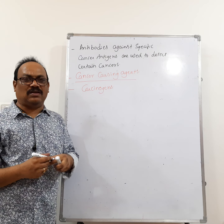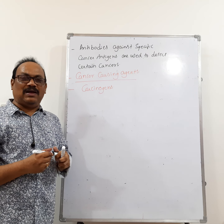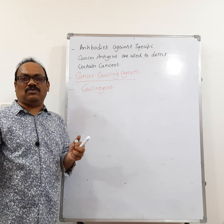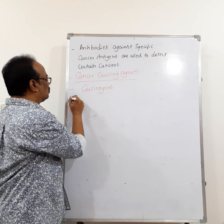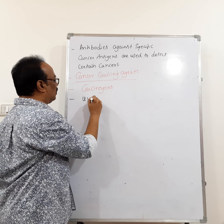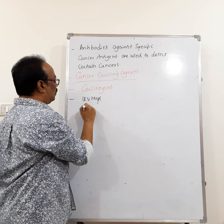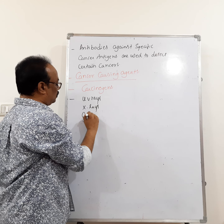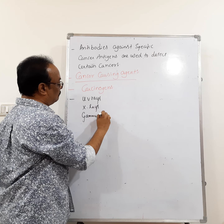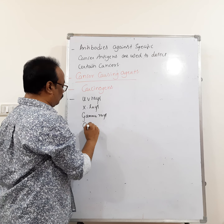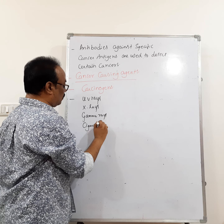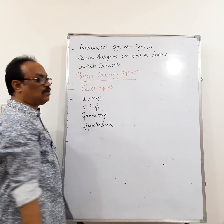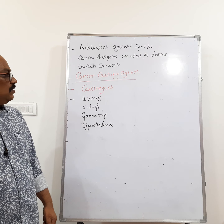There are different types of carcinogens — physical, biological, and chemical. Examples include UV rays, X-rays, gamma rays, and cigarette smoke. All of these are carcinogens.